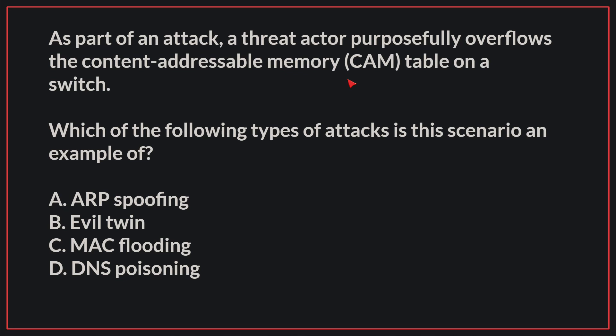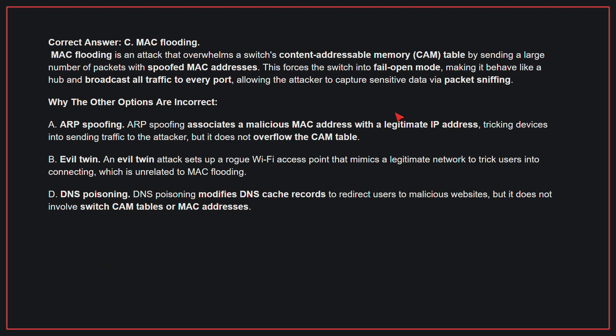As part of an attack, a threat actor purposefully overflows the content addressable memory table on a switch. Which of the following types of attacks is this scenario an example of? The correct answer is C, MAC flooding. MAC flooding is an attack that overwhelms a switch's content addressable memory (CAM) table by sending a large number of packets with spoofed MAC addresses. This forces the switch into fail-open mode, making it behave like a hub and broadcast all traffic to every port, allowing the attacker to capture sensitive data via packet sniffing.